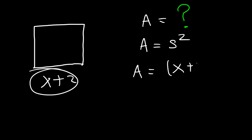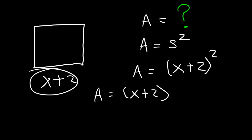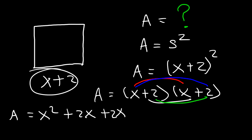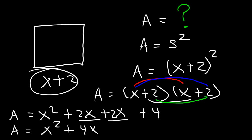So the area is (x + 2) squared. You can leave your answer like this, or you could FOIL it. (x + 2) squared is (x + 2) times (x + 2). Multiplying: x times x is x squared, x times 2 is 2x, 2 times x is 2x, and 2 times 2 is 4. Combining like terms, 2x plus 2x is 4x, so the area is x squared plus 4x plus 4.